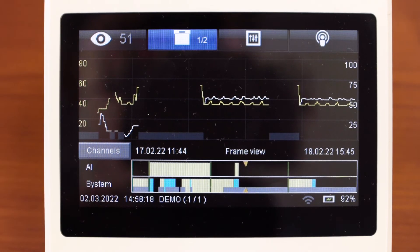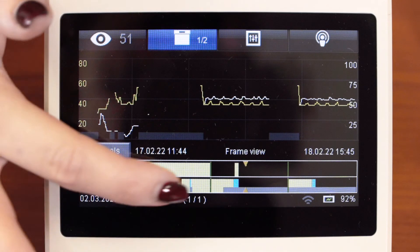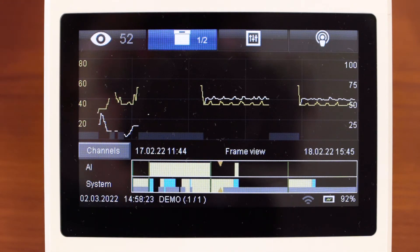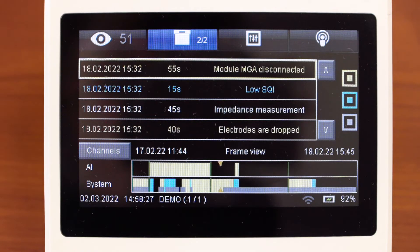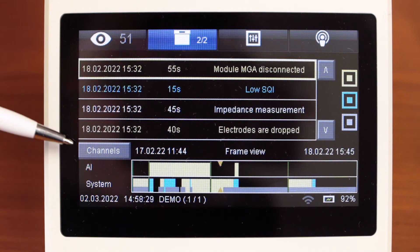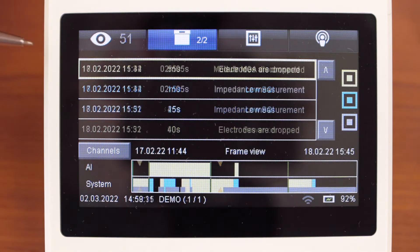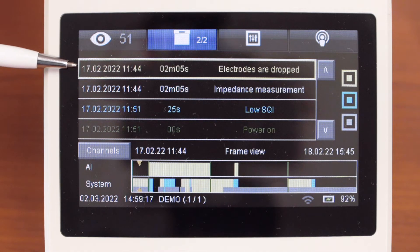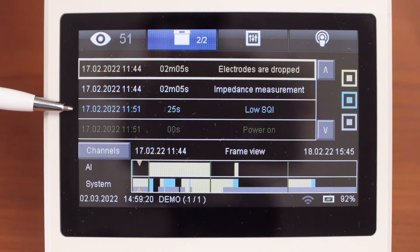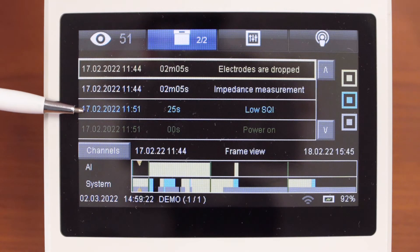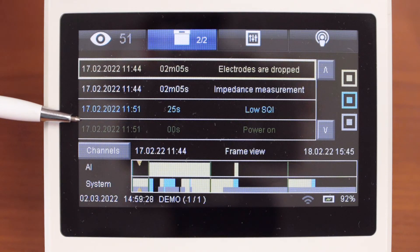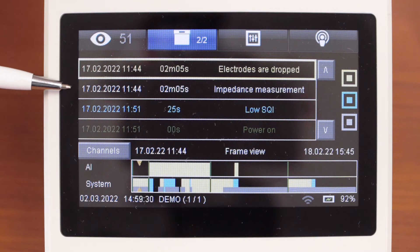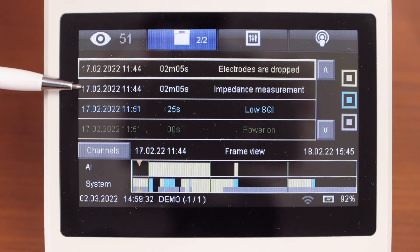You can choose the moment of time and press trend button again. So you can see the alarm. Yellow color means medium priority. Blue color means low priority. Green color means the turn on event. White color means the technical event.